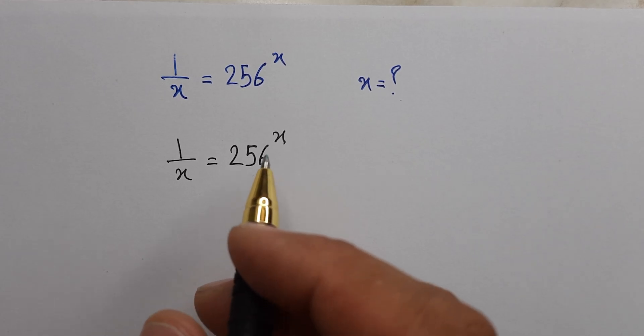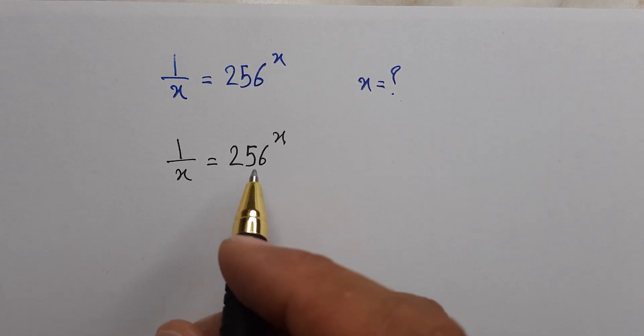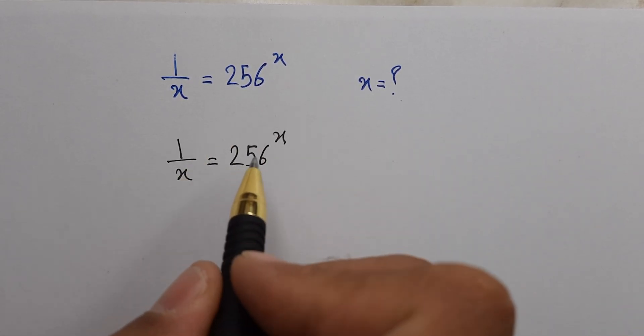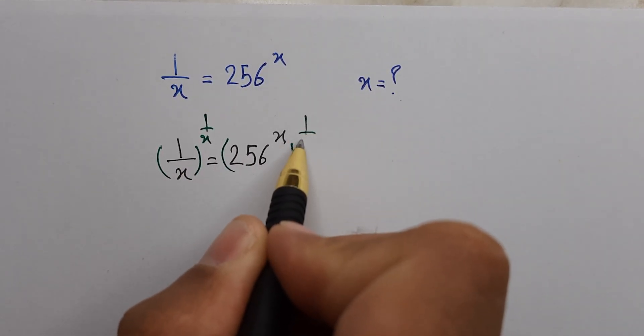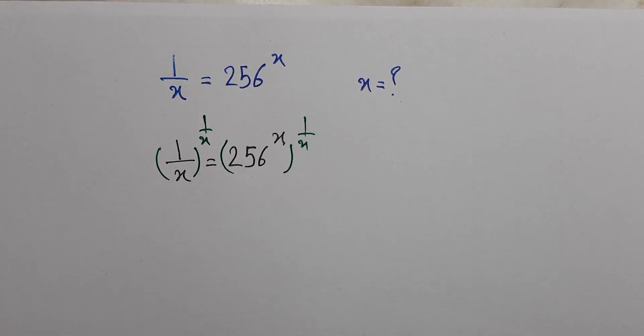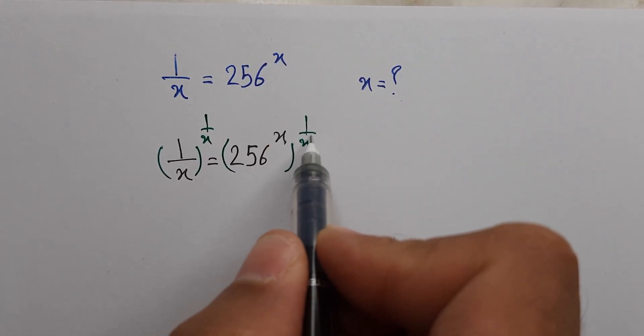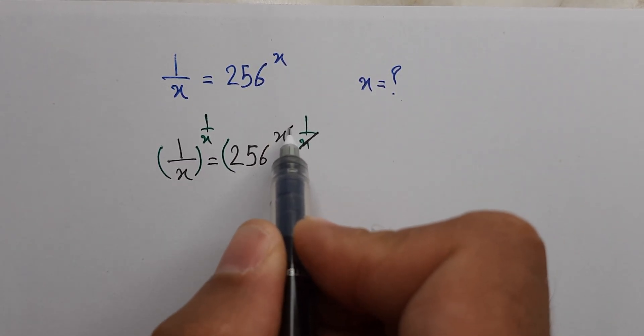Here we can take 1 over x power on both sides. 1 over x on the left side and 1 over x on the right side, so we can cancel out x from here.